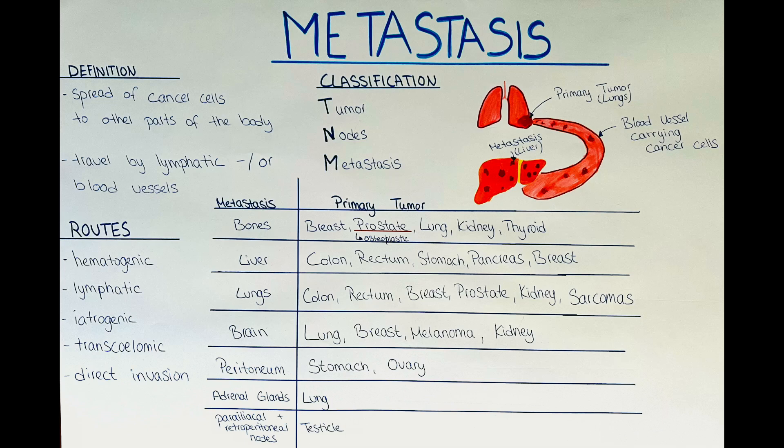The lymphatic spread is essentially the same, just that a primary tumor will then invade a lymphatic vessel and the cancer cells will travel not to another organ but to another lymph node and multiply there. That's why it is important for us to know the pathways of the blood and lymphatic fluid and where it goes in the body.